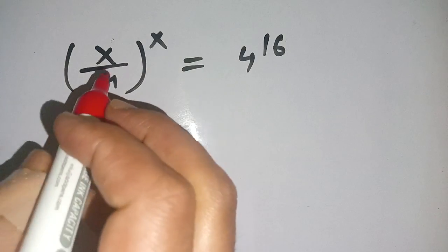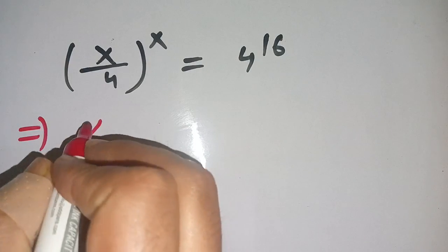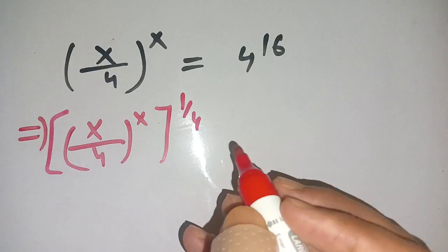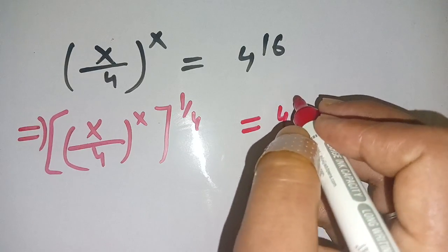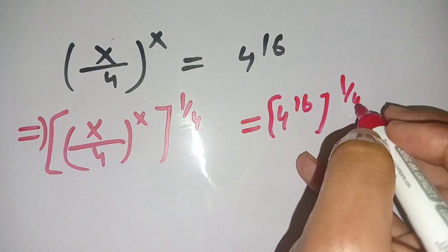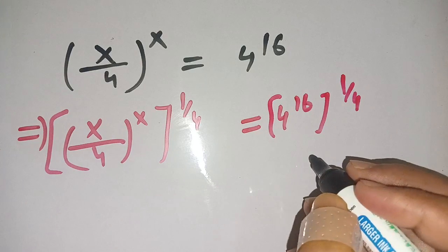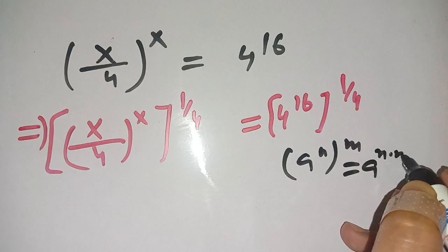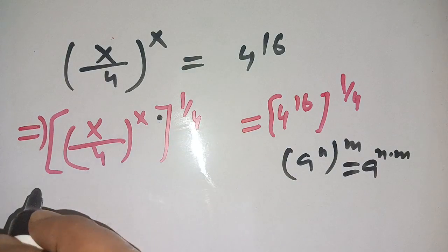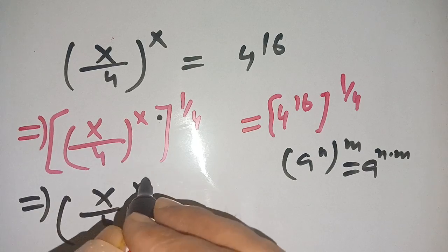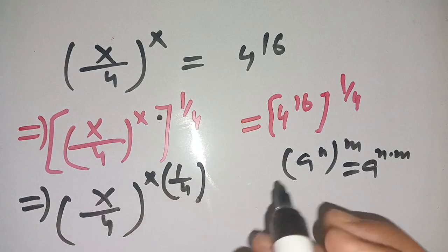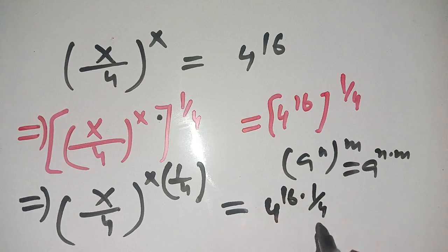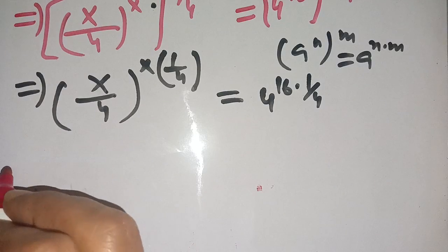Taking the 1/4 power on both sides, we write (x/4)^x raised to the power 1/4 on the left-hand side, and 4^16 raised to the power 1/4 on the right-hand side. We know that (a^n)^m = a^(n times m), so we multiply the powers.